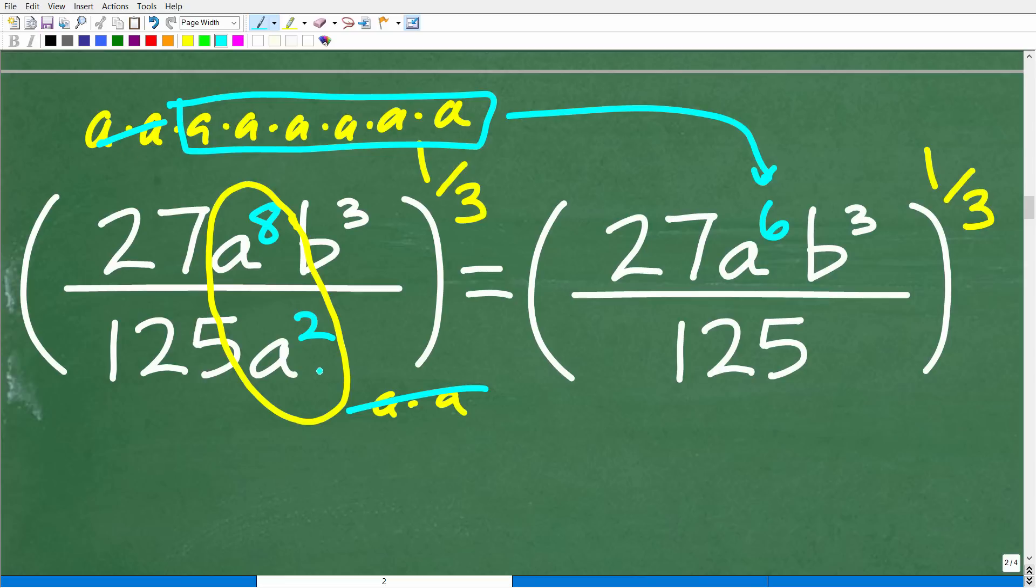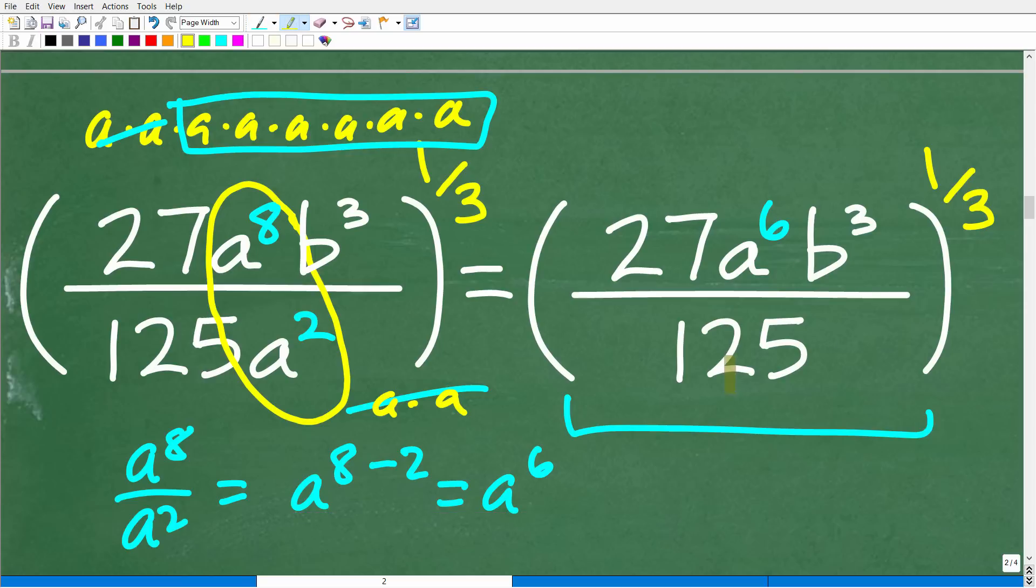So now that we have this nice and cleaned up, there's nothing else for us that we can do that's easy. So let's take a look at these numbers. Now I have 27 and 125. There are no common factors here between these two fractions. But are there any powers that you can think of where you can express 27 and 125? Think of that. And hopefully you're like, oh yes, there's some powers and we're going to write those powers right now.